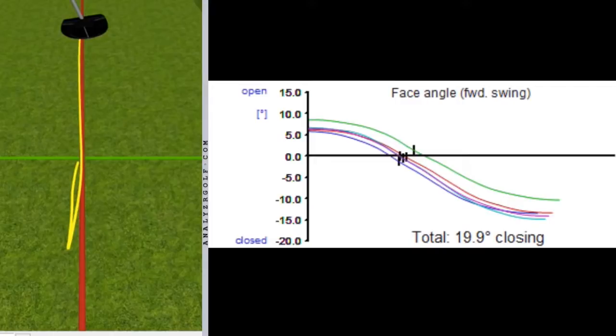We'll also take a look at the rotation rates during the putting stroke. You can see while the shape of each rotation rate is similar in nature, just too big a dispersion, too different looking for Brett to be able to produce the face numbers that he's looking for in order to best control his start lines.